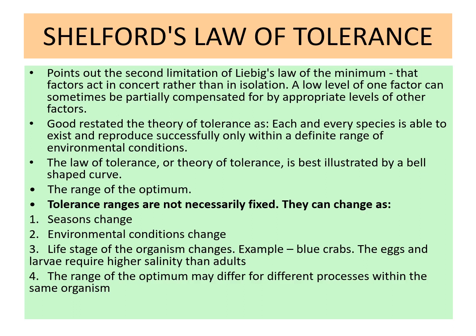Shelford's Law of Tolerance explains that the tolerance range is important — the range in which the individual feels comfortable to live. In that range the population is more, reproductive success is more, and the number of individuals is more. Importantly, this tolerance range is variable; it changes as the season changes, as environmental conditions change, and as the life stages of the organism change. For example, blue crab eggs and larvae require higher salinity than the adults.